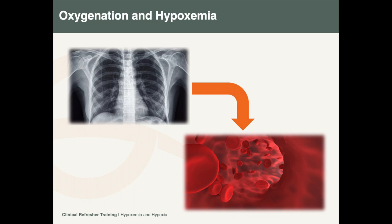Oxygen then binds to the hemoglobin in the red blood cells, or diffuses into the plasma. This is called oxygenation.